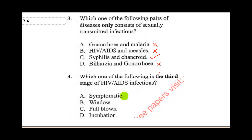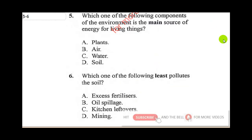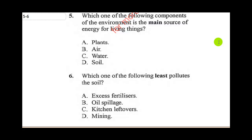Question five says: which one of the following components of the environment is the main source of energy for living things? This is a question a lot of people have been asking about. Remember that living things include both plants and animals, so where do plants draw their energy from, and where do animals draw their energy from? Is it plants, air, water, or soil?